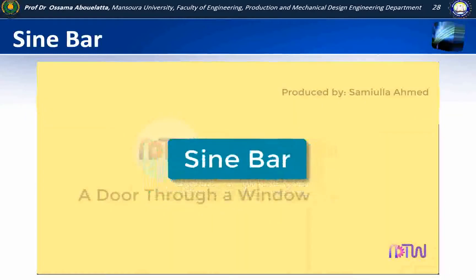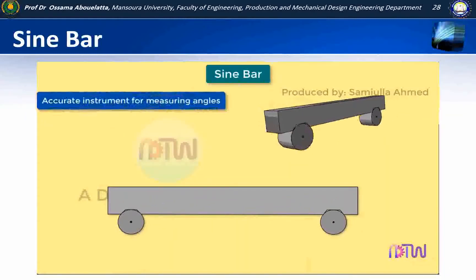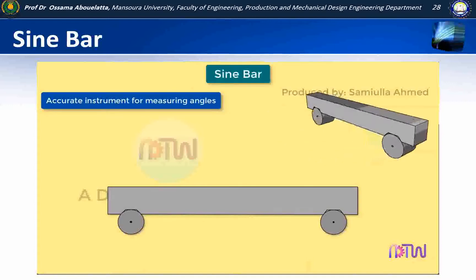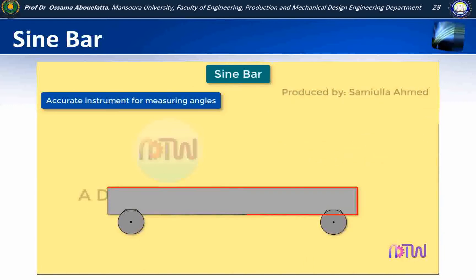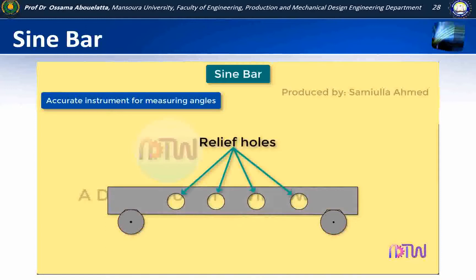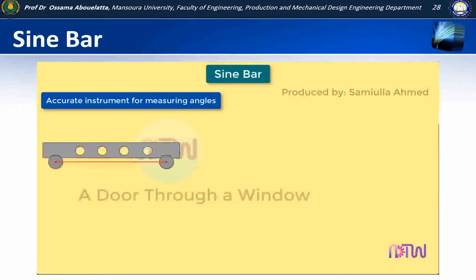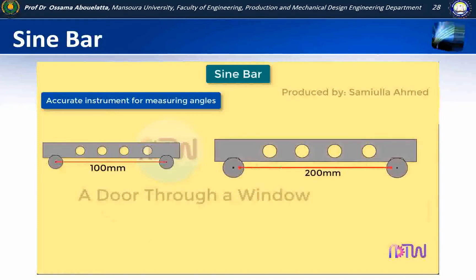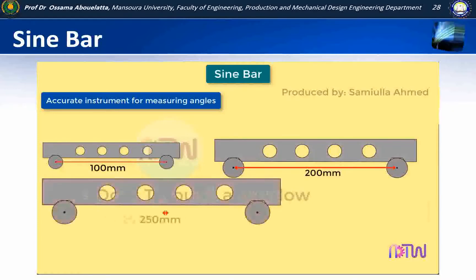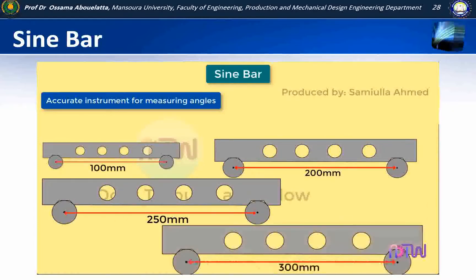Sine bar: The sine bar is the most accurate instrument for measuring angles. It consists of an accurate straight rectangular bar made of high-quality steel, having two accurately lapped cylindrical plugs or rollers at the ends. Relief holes are sometimes provided to reduce the weight. The sine bar is specified by the distance between the centers of two rollers: 100 mm, 200 mm, 250 mm, or 300 mm.